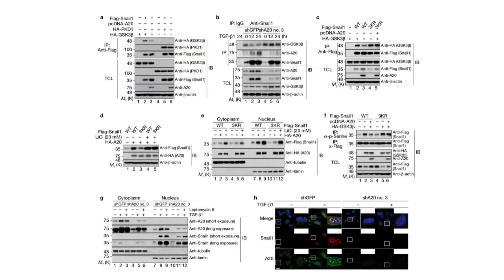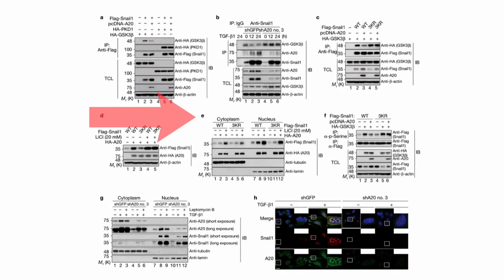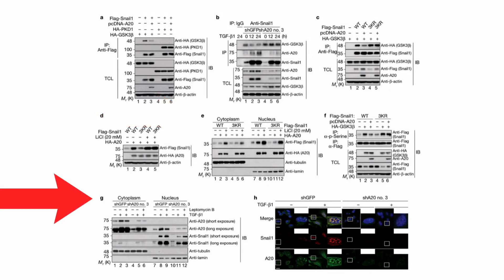Figure seven shows exactly where A20 monoubiquitinates SNAIL1. Interestingly, the researchers found that through inhibition of GSK3-beta for SNAIL1, A20 was able to monoubiquitinate SNAIL1 within the nucleus rather than the cytoplasm, as demonstrated in figure 7E and 7G. Overall, this figure shows that A20 monoubiquitinates SNAIL1 at the 3KR region within the nucleus.